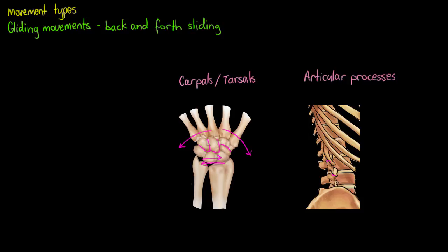The same thing applies to our articular processes on the bony extensions on the spine. If we bend forward, flex our spine forward, or hyperextend our spine backwards, the articular processes are going to slide across each other. When they're sliding across each other like that, it's not forming an angle between two joints, so it can't be an angular movement — so it must be gliding.